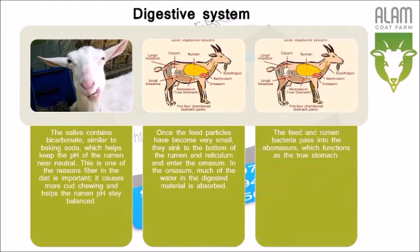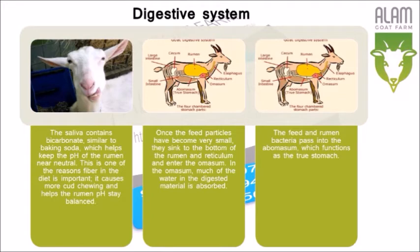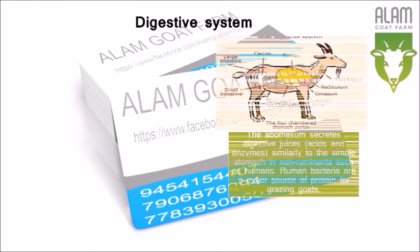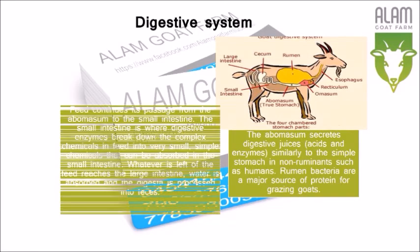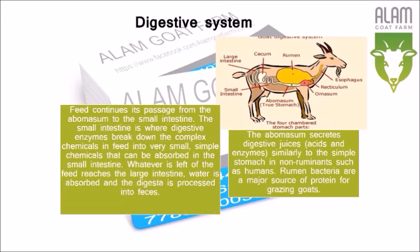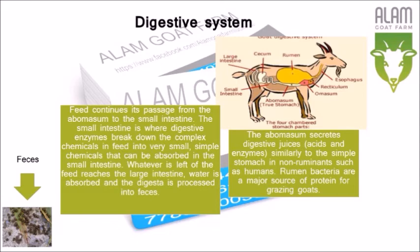Once the feed particles have become very small, they sink to the bottom of the Rumen and Reticulum and enter the Omasum, where much of the water in the digested material is absorbed. The feed and rumen bacteria then pass into the Abomasum, which functions as the true stomach. The Abomasum secretes digestive juices — acids and enzymes — similarly to the simple stomach in non-ruminants such as humans. Rumen bacteria are a major source of protein for grazing goats. Feed continues its passage from the Abomasum to the small intestine, where digestive enzymes break down the complex chemicals in feed into very small, simple chemicals that can be absorbed. Whatever is left reaches the large intestine, where water is absorbed and the digesta is processed into feces.